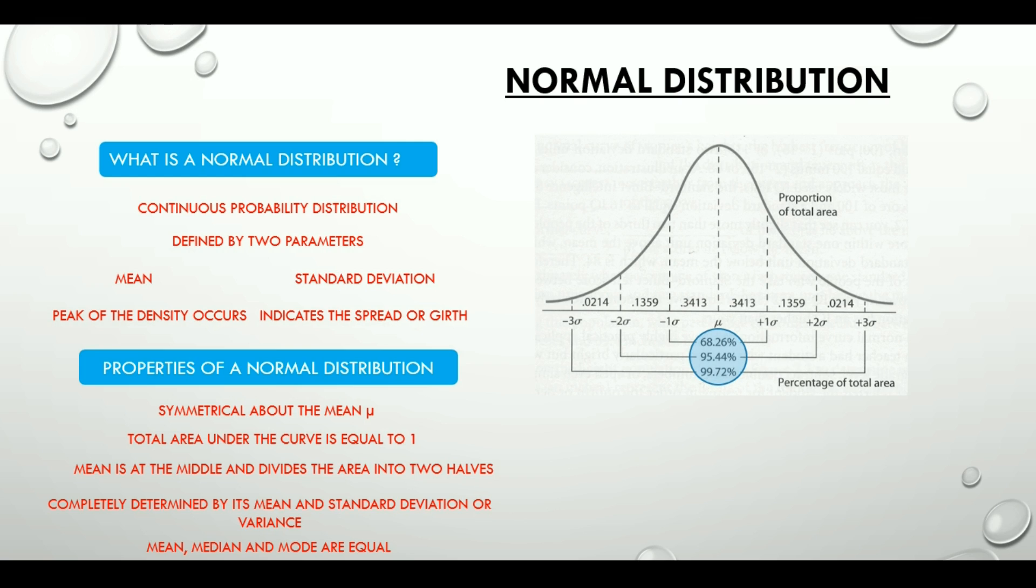This is known as the 68, 95, 99.7 rule in statistics. This is an empirical rule verifiable by observation which says that approximately 68, 95 and 99.7% of the values lie within one, two and three standard deviations of the mean respectively.